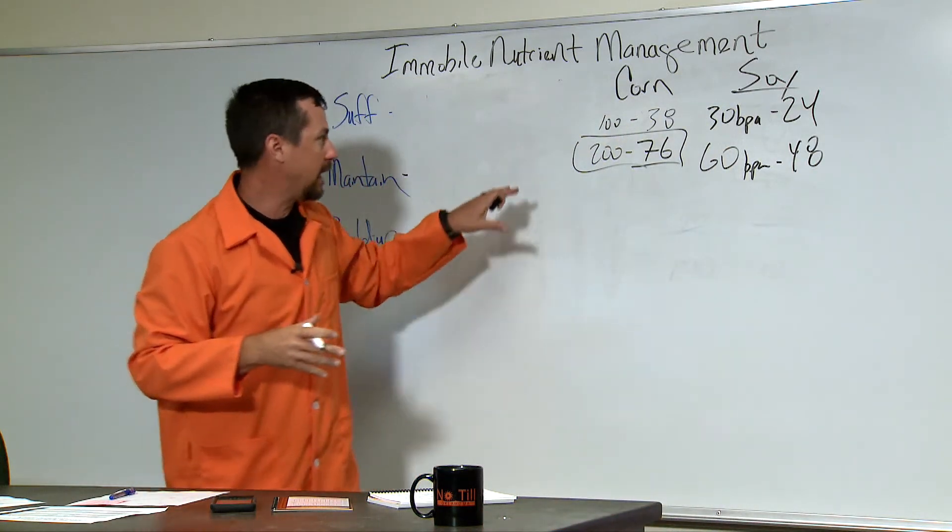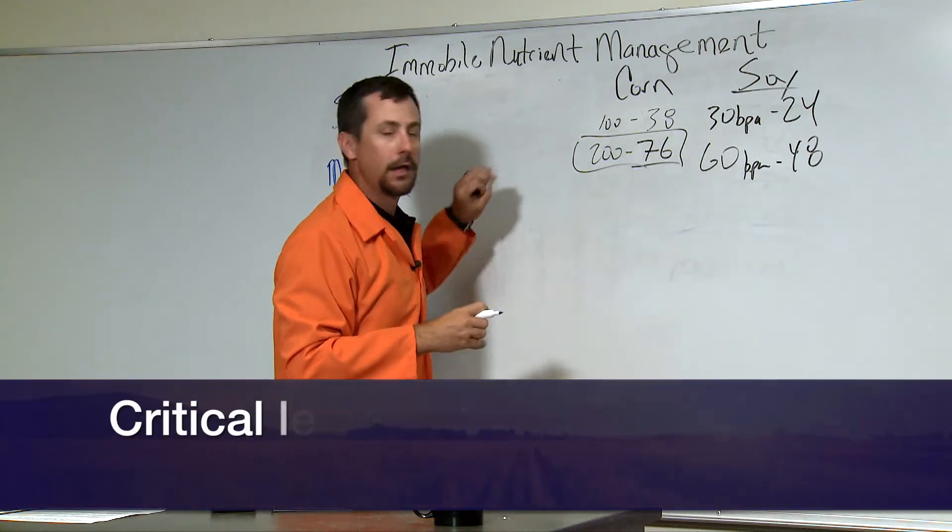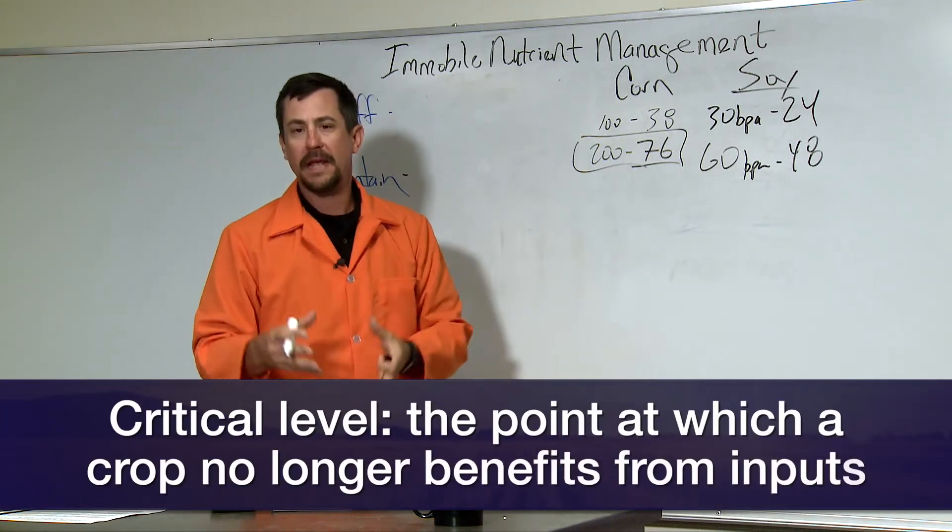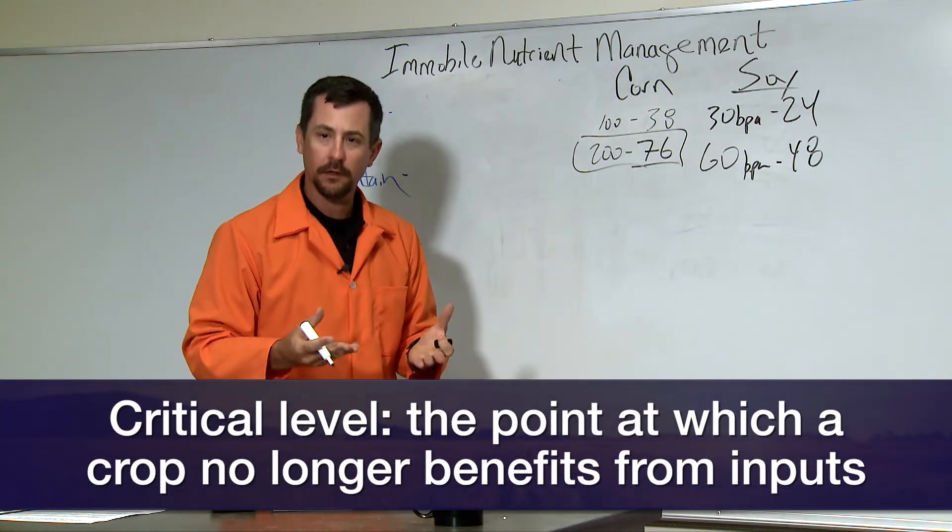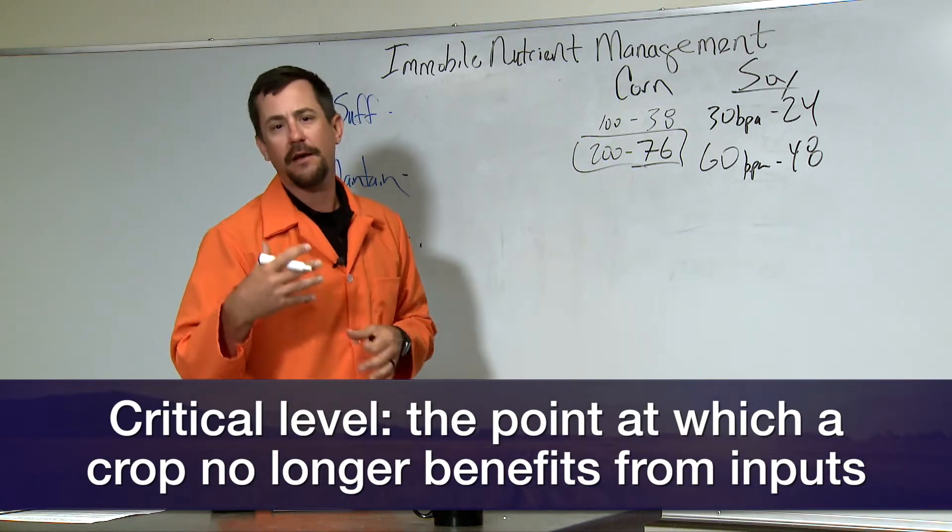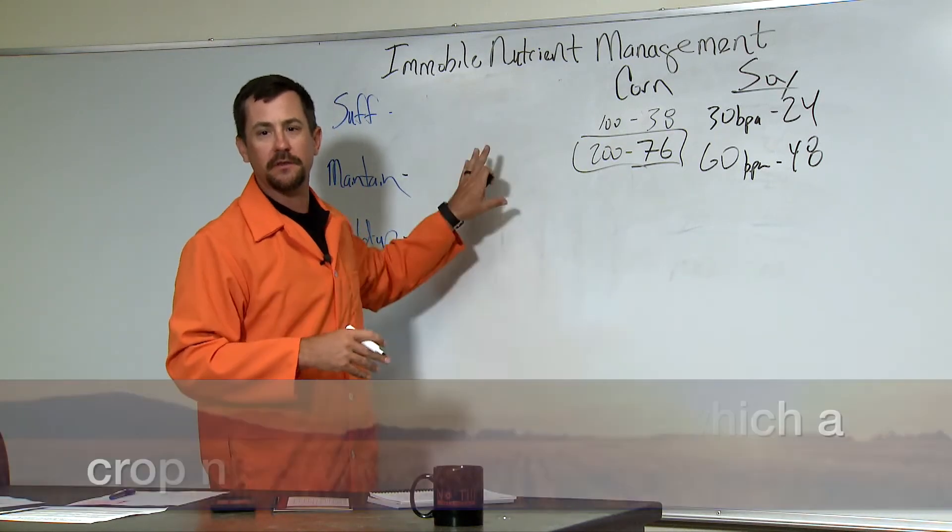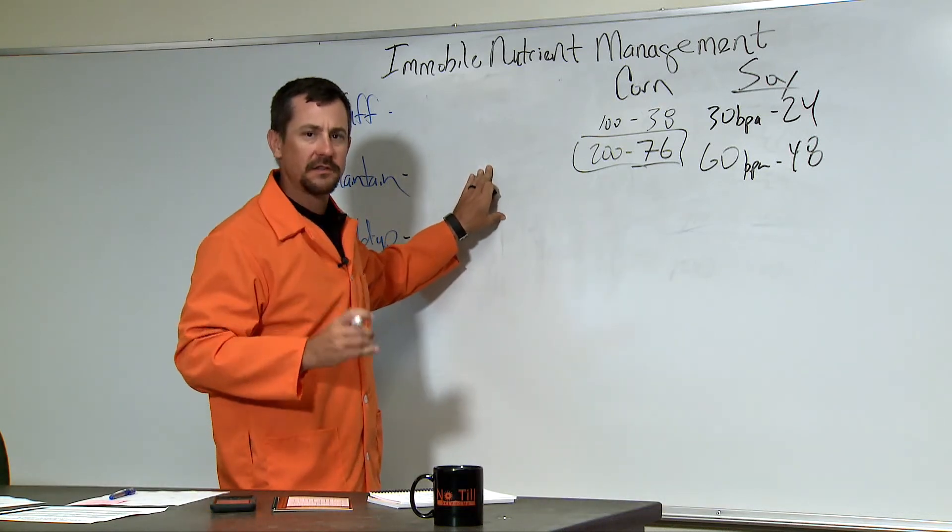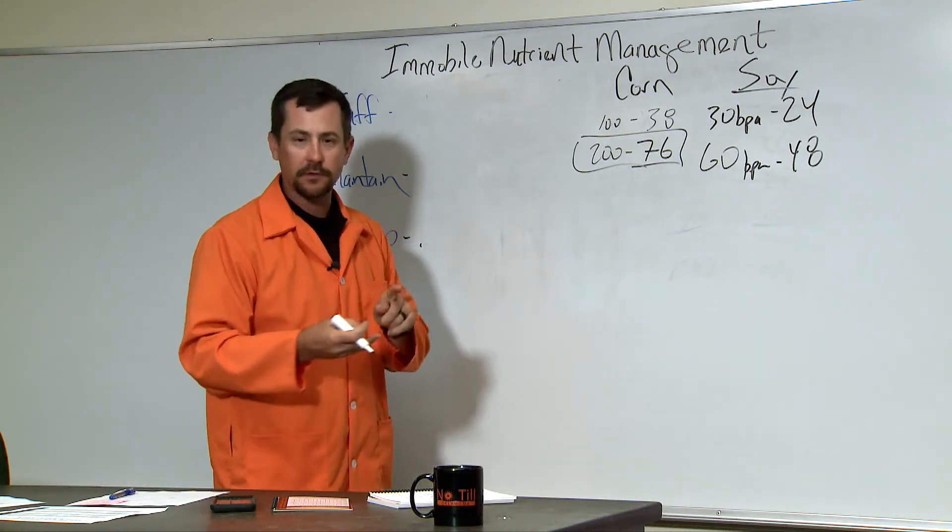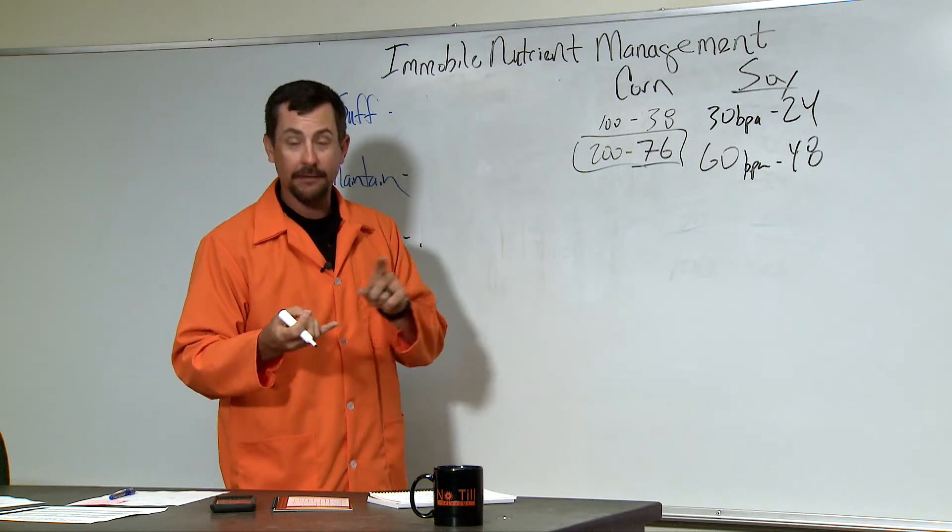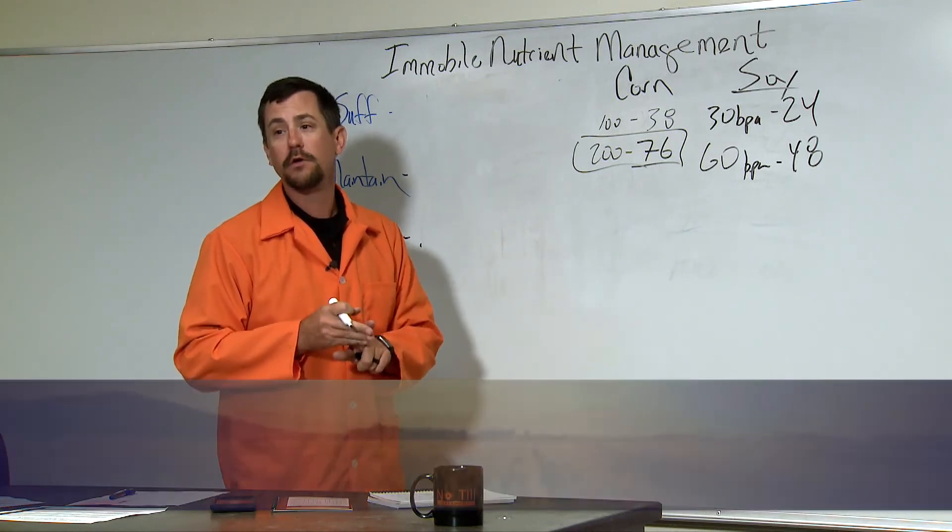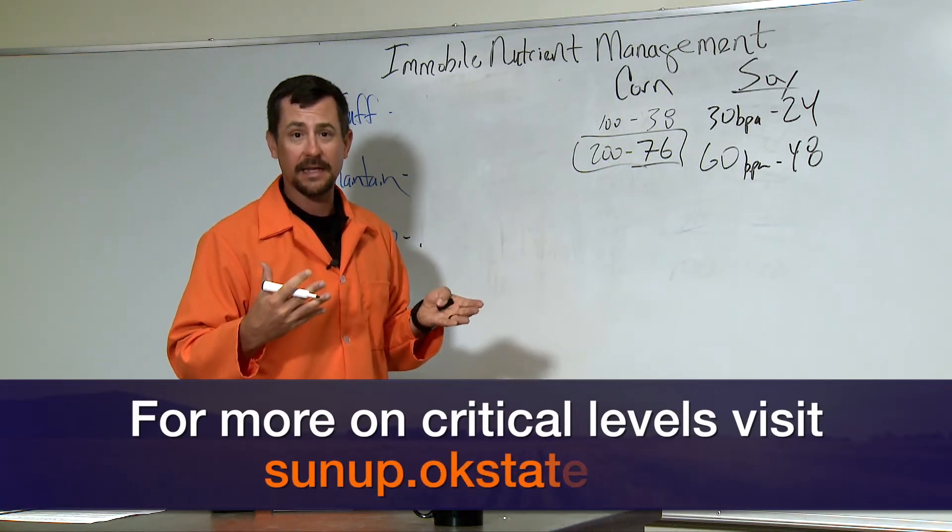So, I go back on this critical level. I talk to a producer and say, okay Brian, do I run sufficiency or maintenance? It's all about your yields. Are you at a yield level where you're annually removing more than you put on based upon sufficiency? Then we need to start considering replacement and those are those locations that have a corn, soybean, wheat rotation with consistently high yields.